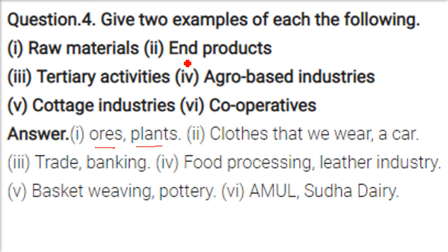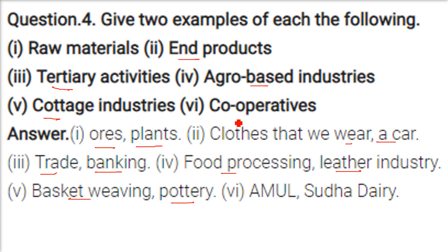Raw materials are ores, plants, and products like clothes and vehicles. Tertiary activities like trading and banking support primary and secondary activities. Agro-based industries include food processing and leather industry. Cottage industry involves anything made by hand, such as basket weaving and pottery. Cooperatives combine raw material producers and product producers — Amul and Sudha Dairy are successful examples of cooperatives.